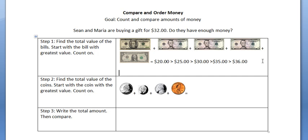We can see that Sean and Maria have $36 in bills.